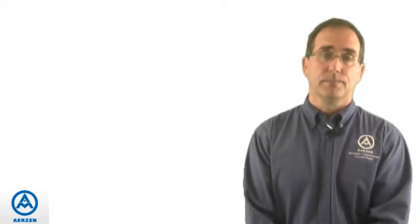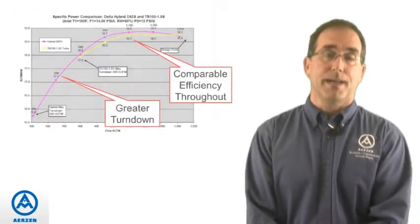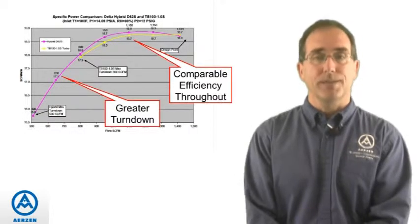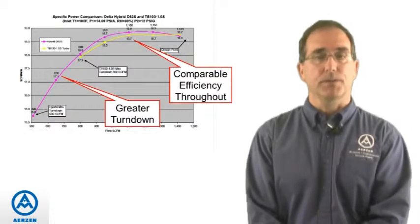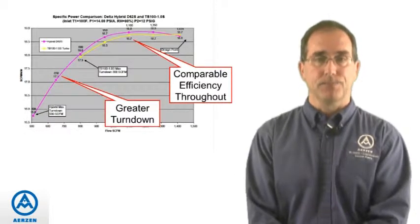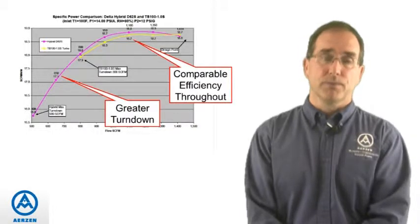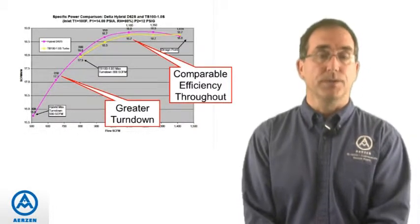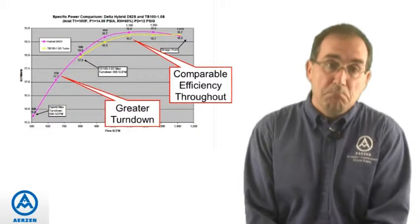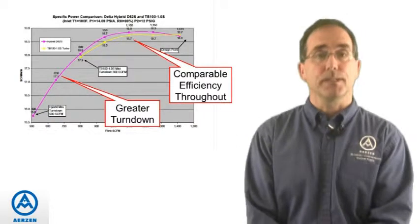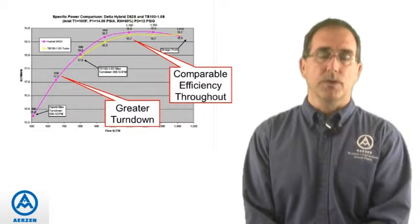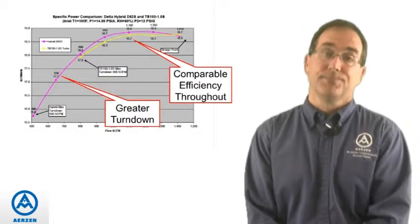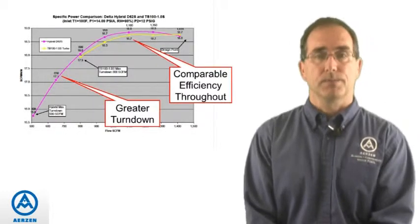In this example, the hybrid and the turbo are pretty much neck and neck with comparable efficiency throughout the entire range. However, if the system calls for a greater level of turndown, the hybrid may be a better choice. If the system is going to run within the range where both blowers lie, then the turbo may be a better choice.